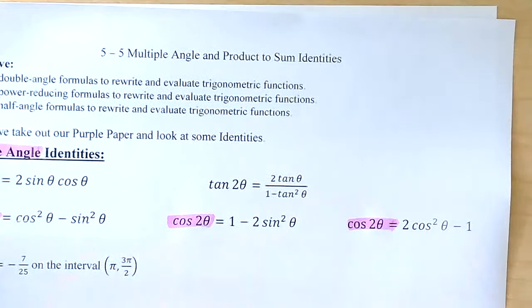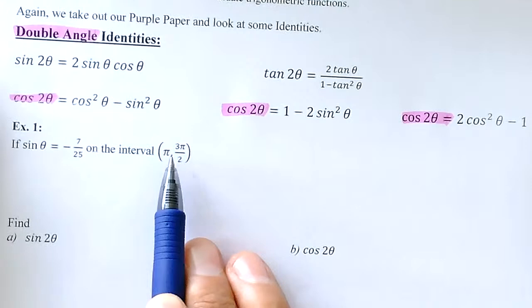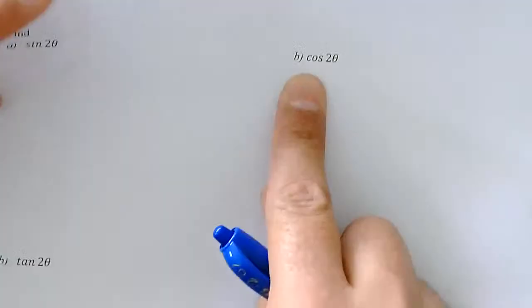Look at number one: given that the sine of theta is equal to negative 7 over 25, and we know that this is true in that interval, we want to find the sine of 2 theta, the cosine of 2 theta, and the tangent of 2 theta. Let's see what we can do.